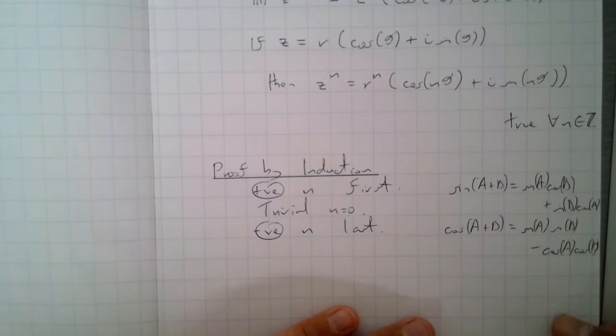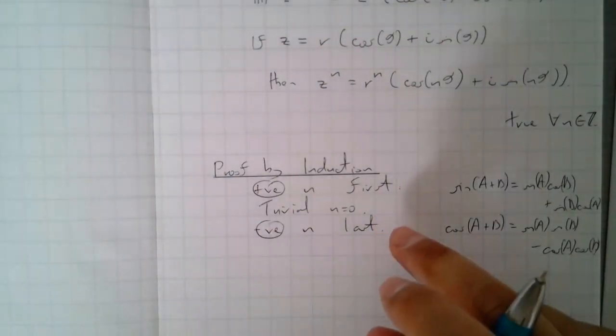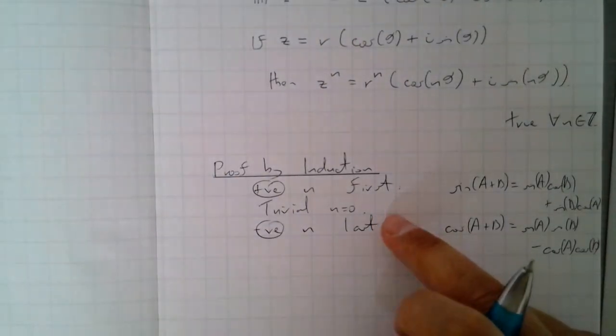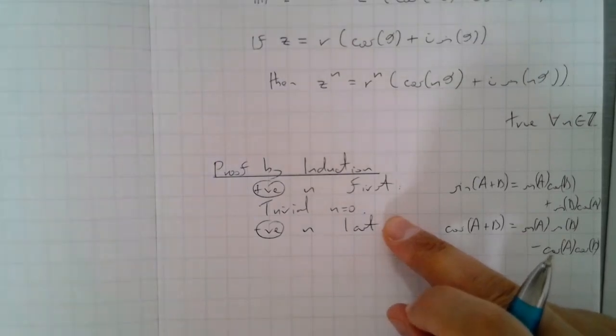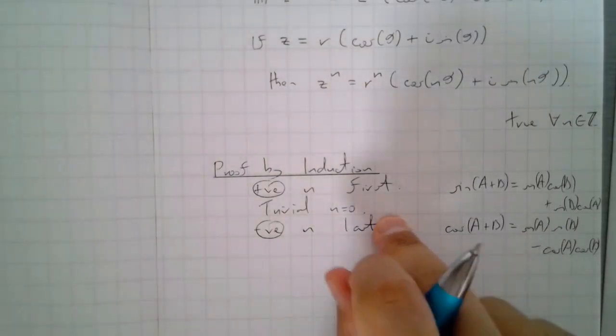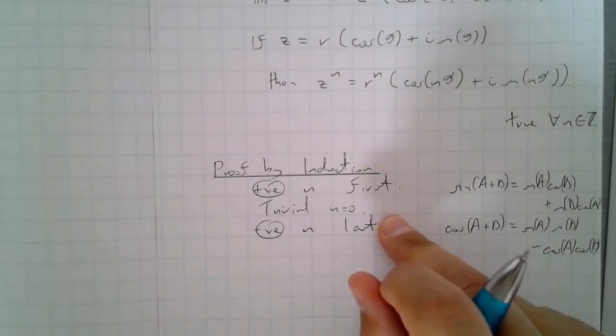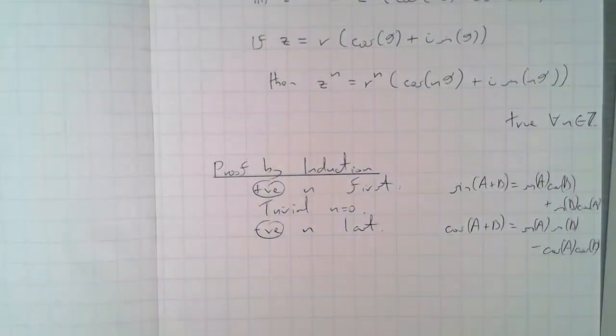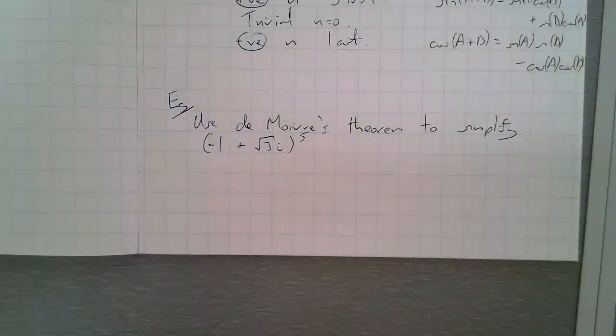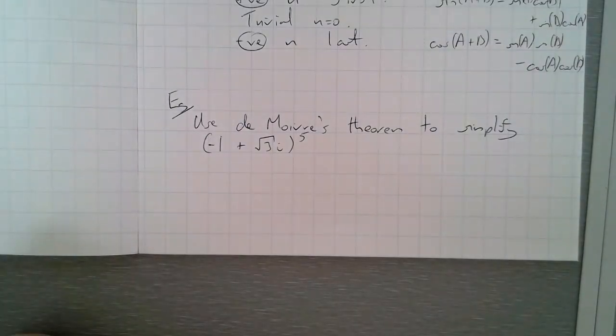So where are we going next? So you guys have a go at that if you want to today. If you don't want to do it today, then it will come up another time, I'm sure. However, instead, let's have a quick go at one example, and then I'll let you guys crack on with some exercises. So let's try the following: use De Moivre's theorem to simplify minus 1 plus root 3i all to the power of 5.